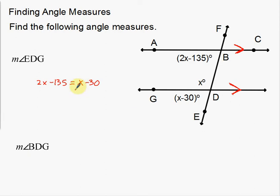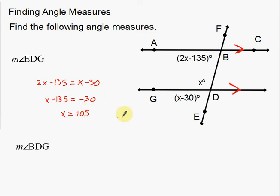Now I'm going to solve this. Moving the X over to the other side by subtracting: X minus 135 equals negative 30. Adding 135 to both sides gives X equals 105, since negative 30 plus positive 135 is positive 105. Now that I have X, I'll plug it in to find EDG: that's 105 minus 30, which equals 75. So EDG is 75 degrees.